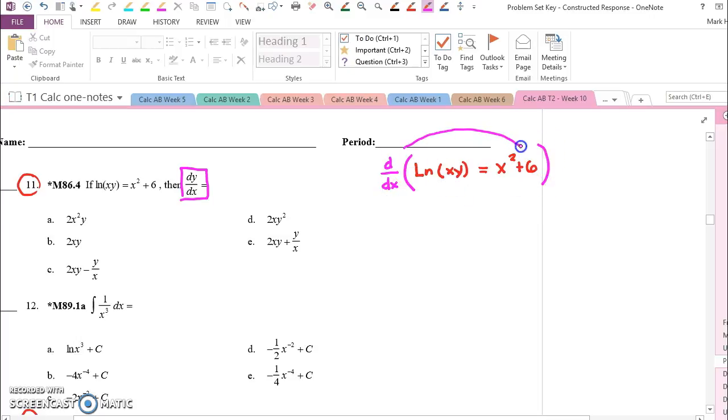So the first term is easy. The derivative of 6 is 0. The second term is easy. The derivative of x squared with respect to x will just be 2x.